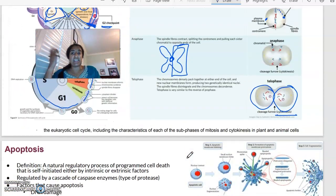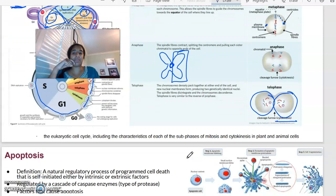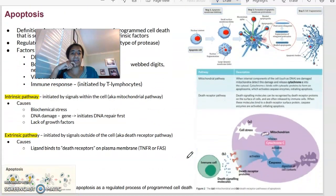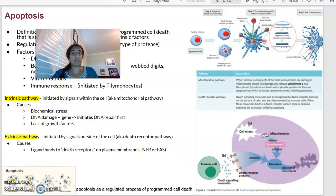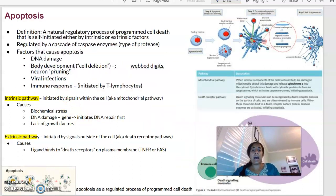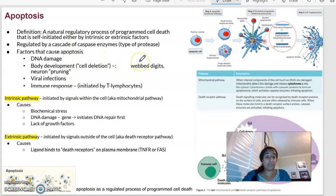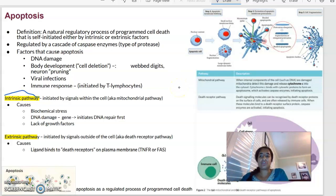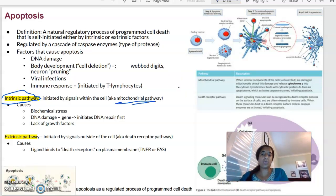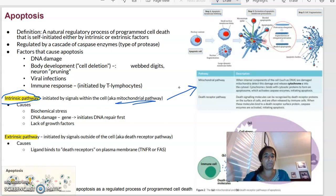As opposed to cells being created, we also have a process of cell death. So cell death has a special name. It's called apoptosis. And it's basically a regulated process. It's programmed cell death that's initiated by what we call either intrinsic or extrinsic factors. So there's two major pathways that we look at. We look at the intrinsic pathway, which we also call the mitochondrial pathway.